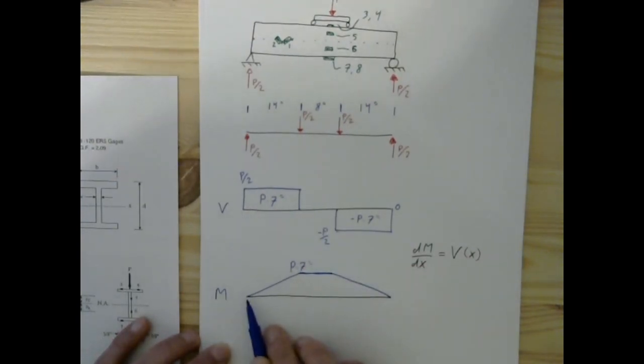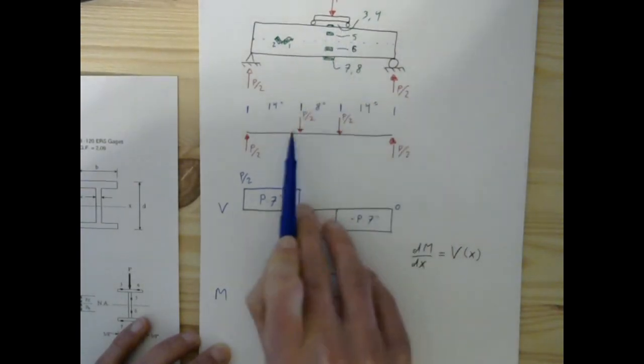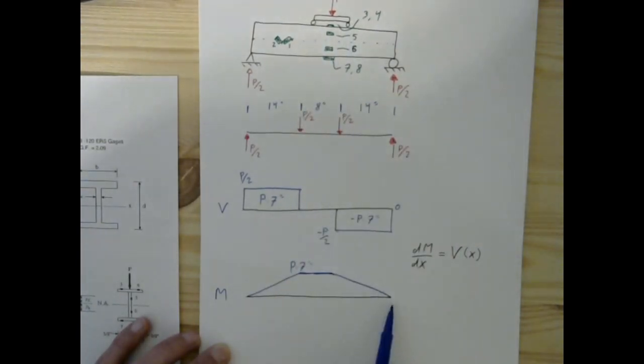It's going to linearly change from this point to this point, it's going to remain constant P times 7 inches from this point to this point between these two applied loads, and then it's going to linearly return to zero. We end at zero, very good.